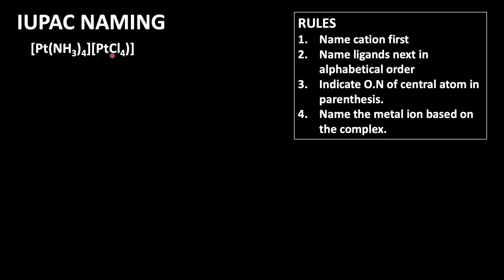We cannot get its nature directly. So in this case we're going to use the coordination number. Platinum's coordination number is 4 here, and in the other coordination entity the coordination number is also 4. So it means that oxidation state of platinum in both complexes must be the same. Using this information, let us find the oxidation number of platinum.